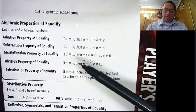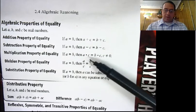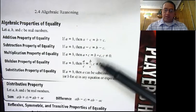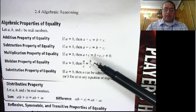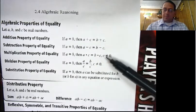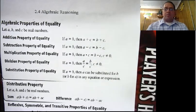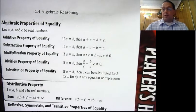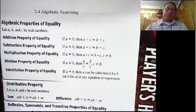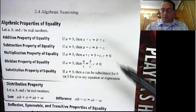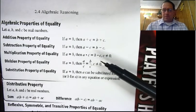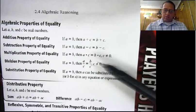Multiplication property of equality — same thing. I can multiply both sides of the equation by the same thing and it is still going to be equal. Now, this specifies that c doesn't equal 0, because if you multiply by 0, technically it still works since you get 0 equals 0, but it is very, very useless.